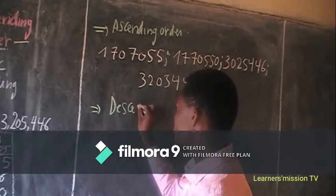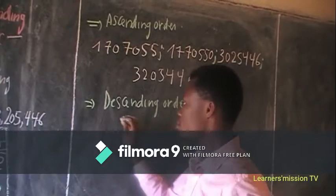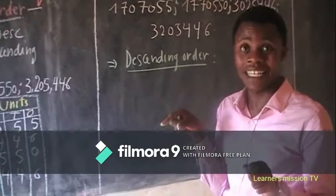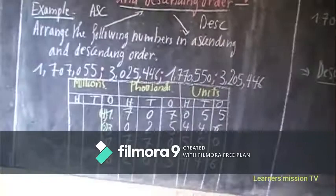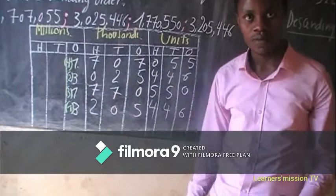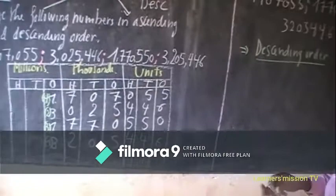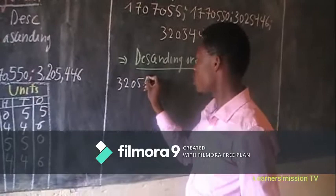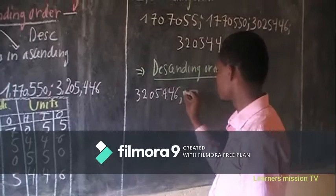Next, descending order. We are going to start from the greatest to the smallest. The greatest is number one. We are going to arrange from number one up to four, because we are going from the greatest to the smallest: three, two, zero, five, four, four, six.